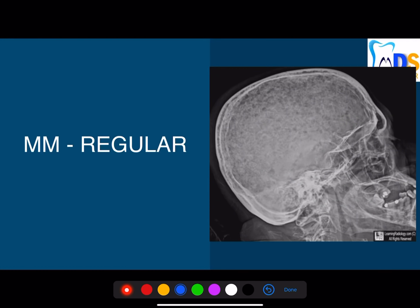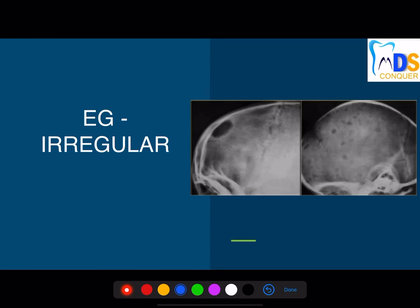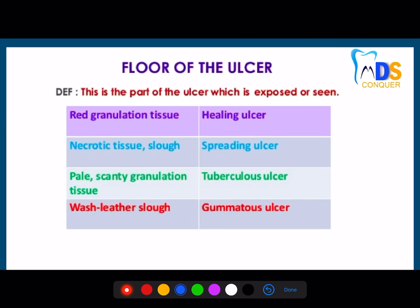Regular punched-out lesions seen on radiograph are associated with multiple myeloma, whereas irregular punched-out lesions are seen in eosinophilic granuloma. To recap floor types: red granulation = healing ulcer; necrotic slough = spreading ulcer; pale granulation tissue = slow-healing ulcer; wash leather slough = gummatous ulcer (syphilis).